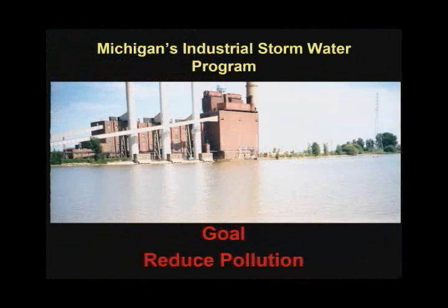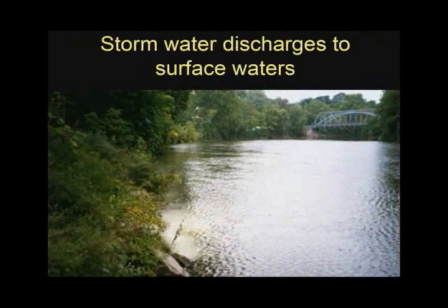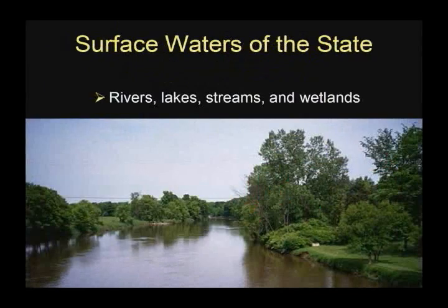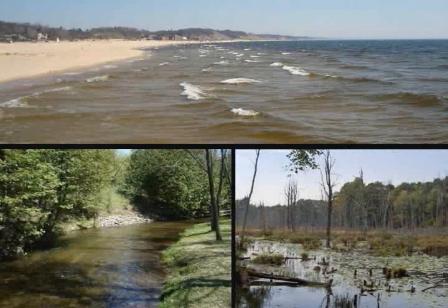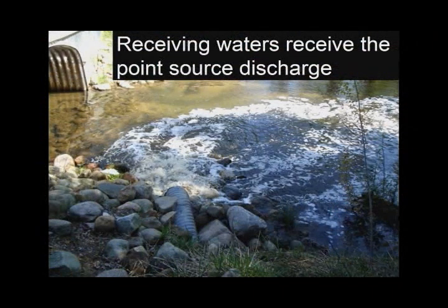The goal of the stormwater program is to reduce pollution entering Michigan's waters by implementing controls designed to prevent the contamination of stormwater runoff. At industrial facilities, some of the stormwater infiltrates or soaks into the ground. The stormwater that does not infiltrate runs off to surface waters or is directed to waters of the state through open or closed storm sewer systems. Surface waters of the state include rivers, lakes, streams, and wetlands. The surface water that receives the point source discharge is called the receiving waters.